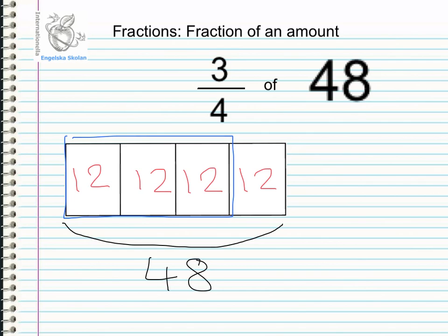Now I can use multiplication, twelve times three, my vertical method of addition which would be twelve plus twelve plus twelve, or I can solve it mentally and I know that twelve times three equals thirty-six. So we can see that three quarters of forty-eight equals thirty-six.